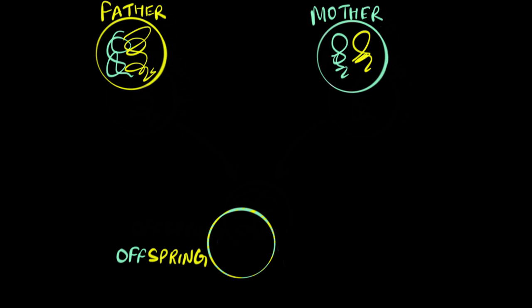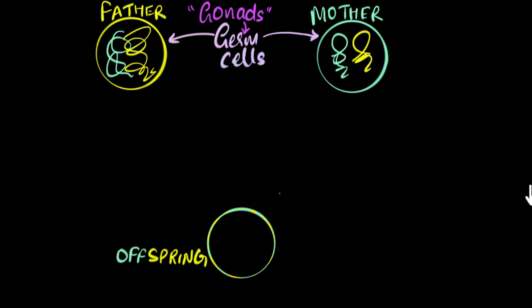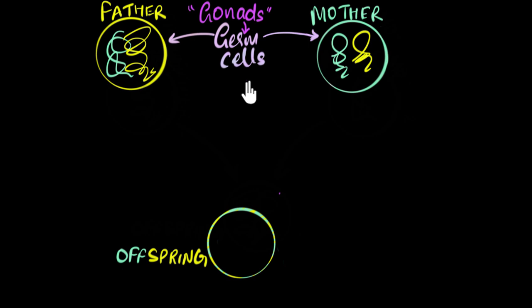So now comes the question: how do we transfer this to the offspring cell without increasing the number? That's where a very special kind of cells come into picture called the germ cells. Germ cells are usually found in the gonads — the reproductive organs. In males, the gonads would be the testes, and in females, the gonads would be the ovaries. That's where you'll find these germ cells. But what are they? Well, they are the ones that can produce gametes.